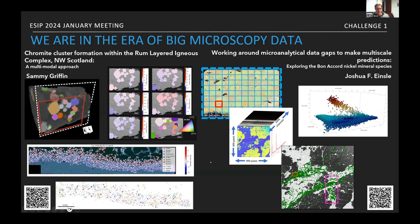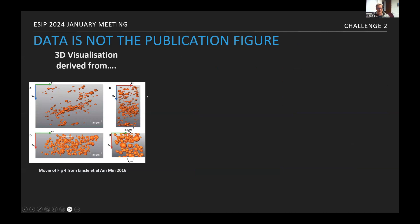One thing that came up in a follow-up talk at AGU was that we may end up with so much data it won't be physically possible to store it all, so we need to start developing frameworks to decide what data we want to keep and how to keep it. The second challenge is to remember that the publication figure is not the data.